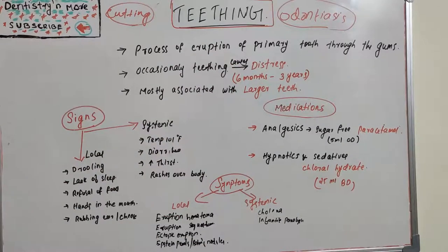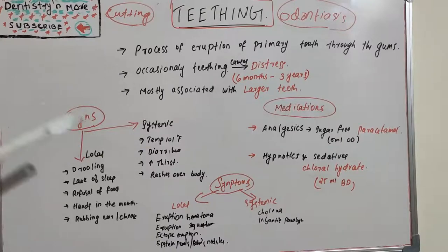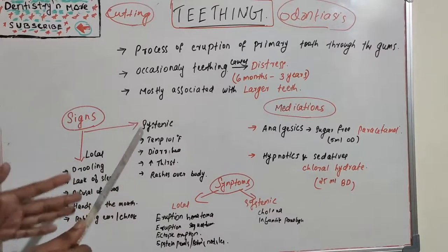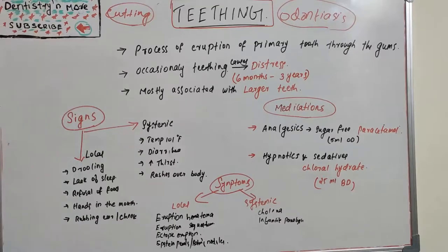Teething is a common physiological process, but when it creates problems, the signs and symptoms described will arise. Epstein pearls and Bohn's nodules are among the notable associated symptoms. Teething is a physiological process that at times causes distress to the baby. That's all about teething — I'll come up with a new session on dentistry and more. Thank you.